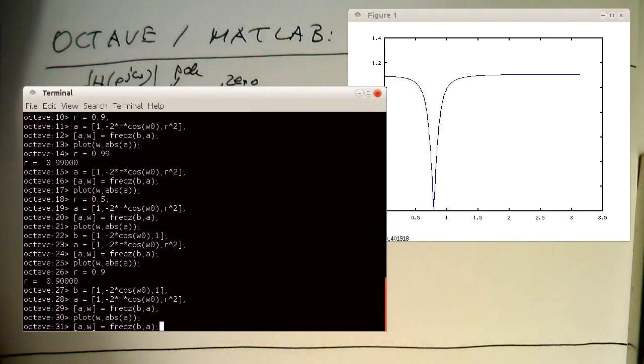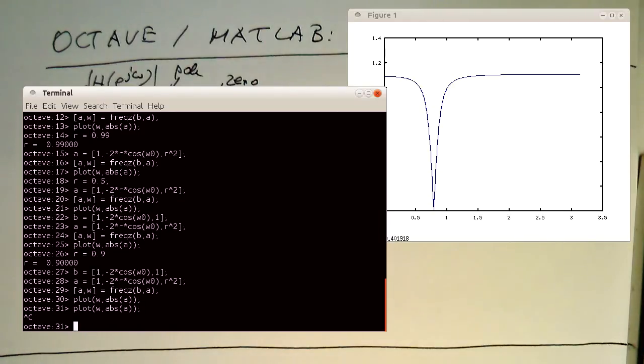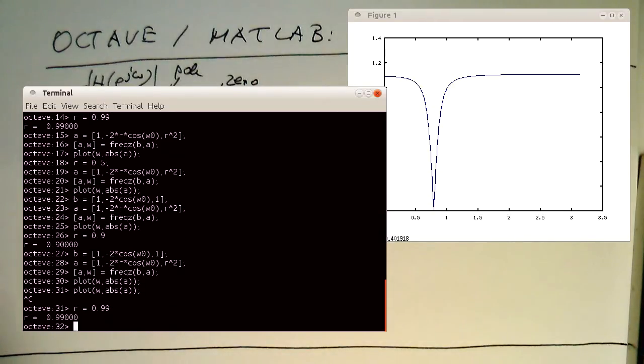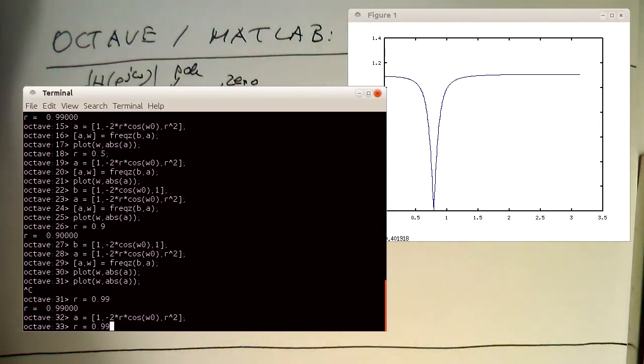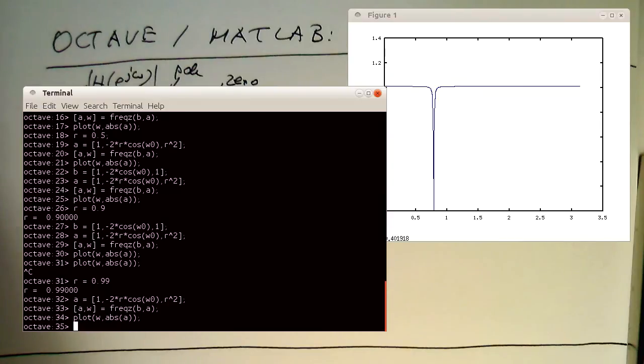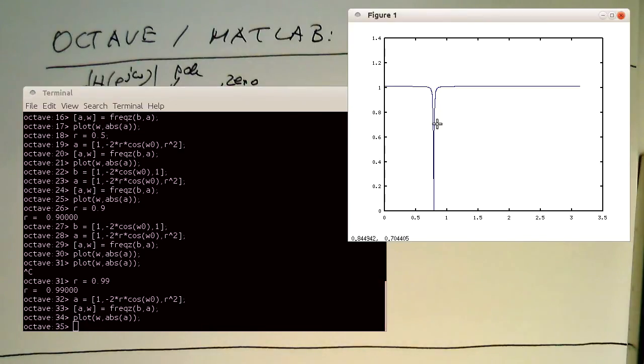So let's do this even a bit more dramatic here that we say R is 0.99 and creating a new frequency response and plotting that. So now we see here with a factor of 0.99 so we are very very close to the unit circle here with our resonance and getting a very narrow damping here. And it's like a proper stop-band filter here.